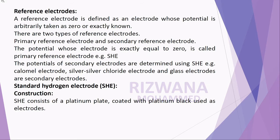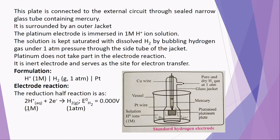For the construction of the standard hydrogen electrode, it consists of a platinum plate coated with platinum black, used as the electrode. Platinum black is obtained by the electrolysis of chloroplatinic acid. During the reduction process, black-colored platinum deposits on the cathode. This platinum black is used to coat the platinum plate, and it provides a large surface area. This platinized platinum plate is used as the electrode.